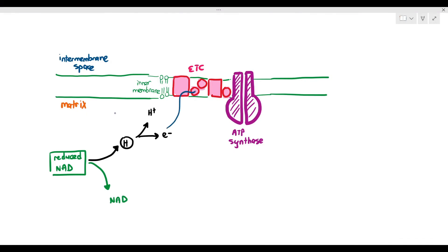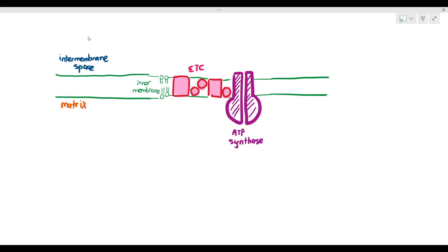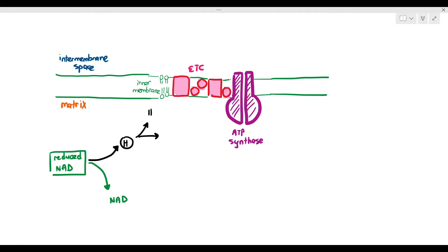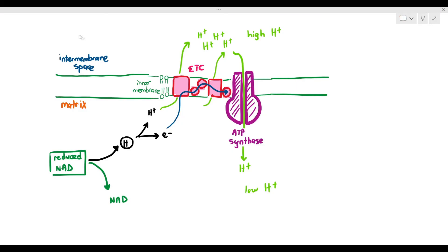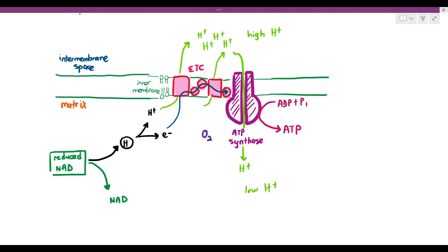Here is a simplified summary of oxidative phosphorylation and chemiosmosis: We start with reduced NAD, which is oxidized to release hydrogen atoms and regenerate NAD. The hydrogen atom splits into hydrogen ions and electrons. The electron moves through the ETC and provides energy to it. The ETC pumps hydrogen ions against the concentration gradient into the intermembrane space, creating a proton gradient. Hydrogen ions diffuse through ATP synthase via chemiosmosis, causing ATP synthesis. Finally, oxygen — the final electron acceptor — receives the electrons together with hydrogen ions to form water.